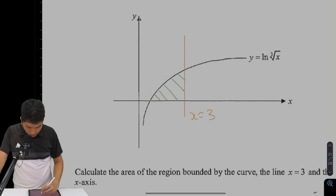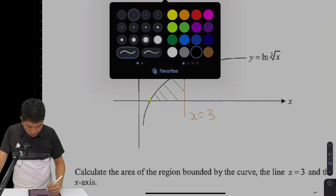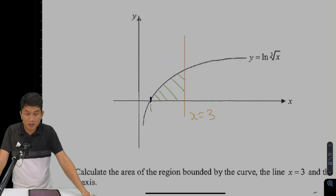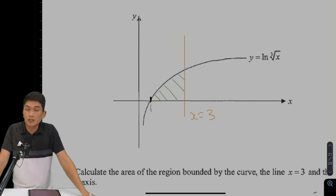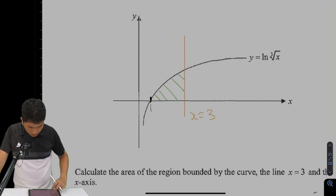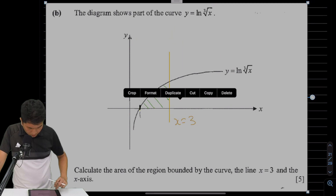So how do you know the lower limit is 1? Because natural log of 1 equals 0, so the curve meets the x-axis at x equals 1. That gives us the lower limit.